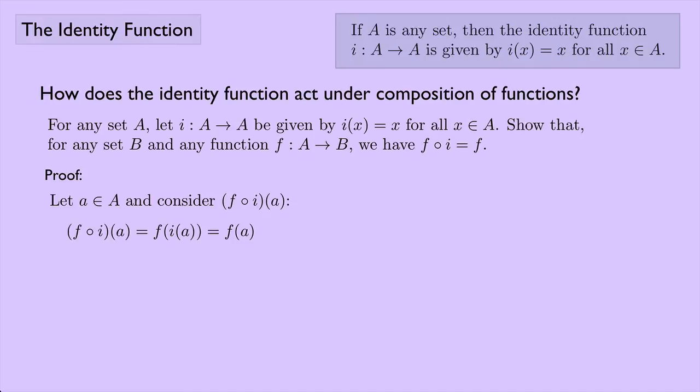Well, f composed with i is the same thing as f of i of a, but we know that i of a is just a. That's what the identity function does. So this is just f of a. So that says that f composed with i gives us f. How do I know that? Well, here's f composed with i, acting on some element a, and that gave us back f, acting on some element a. So in general, for any element a, this should work, so f composed with i, that gives me f.